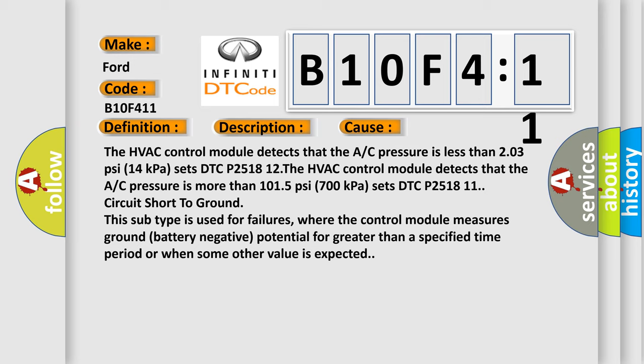Circuit short to ground. This subtype is used for failures where the control module measures ground (battery negative) potential for greater than a specified time period or when some other value is expected.